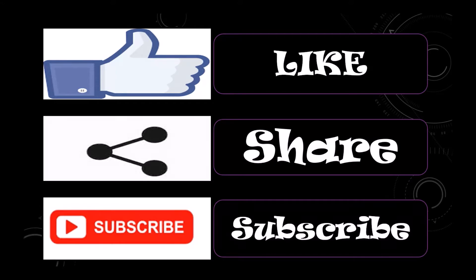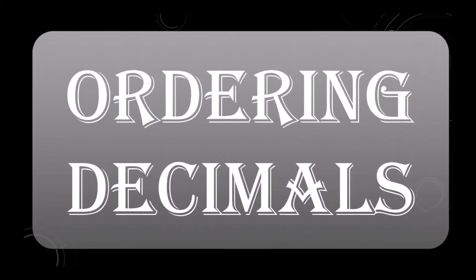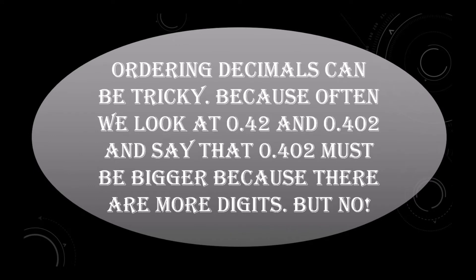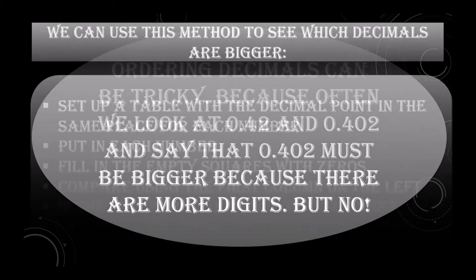Through this video you will learn something about ordering decimals. Ordering decimals can be tricky because often we look at 0.42 and 0.402 and say that 0.402 must be bigger because there are more digits. But no — we can use this method to see which decimal is bigger.